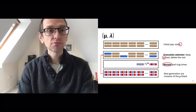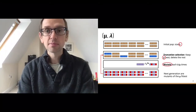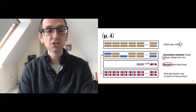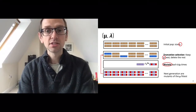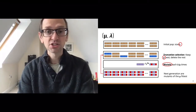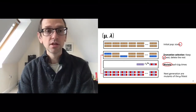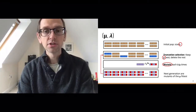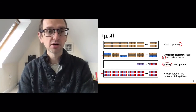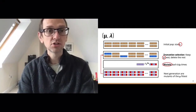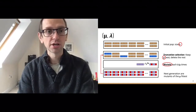There are three tunable parameters to take note of: first, the initial population size; second, mu, used for truncation selection; and third, the mutation operator itself — something you would need to conceptualize and code.